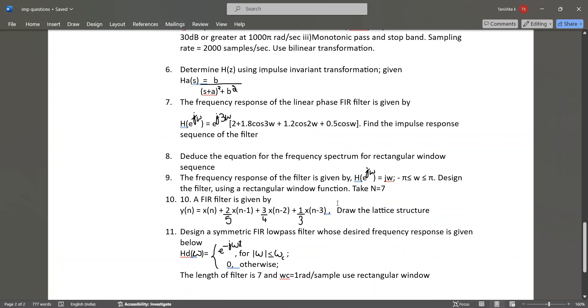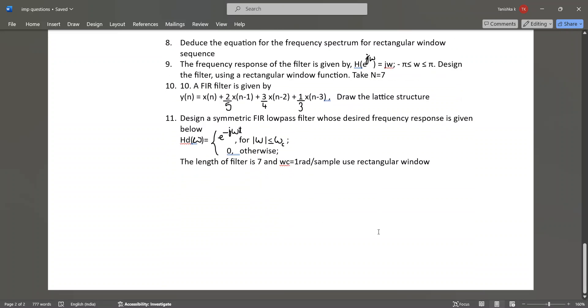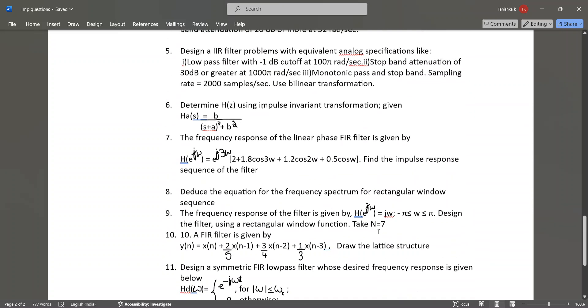An FIR filter is given, and you have to draw the lattice structure for it. Design a symmetric FIR low-pass filter with given desired frequency response, filter length of 7, and ωc = 1 rad/sample using a rectangular window.